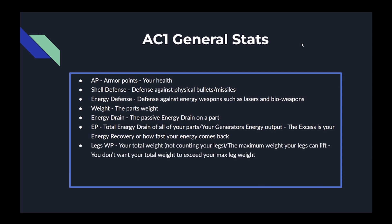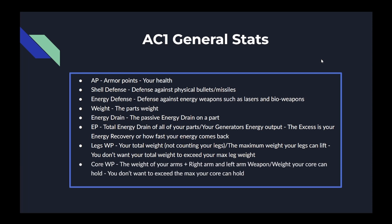Leg WP, or legs weight point, is how much your legs can hold according to weight. The number on the left is your total weight of all parts not counting the legs, because they're not lifting themselves; the right side is the maximum weight your legs can lift. You don't want your total weight to exceed the max. Next is your core weight points — the left side is the weight of your arms plus your arm weapons, and the right side is the weight your core can hold. This mainly comes into play with a light core and very heavy arms or a heavy weapon such as the Karasawa laser.